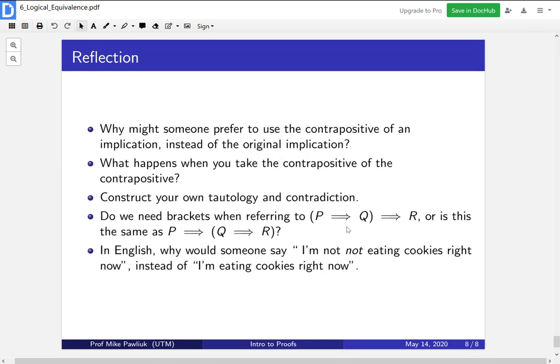Let's take some time to reflect. Why might someone prefer to use the contrapositive of an implication instead of the original implication? What benefits does that have? What happens when you take the contrapositive of the contrapositive? What do you get? Construct your own tautology and contradiction. Do we need brackets when referring to brackets P implies Q brackets implies R? Or is this the same as putting the brackets on Q implies R?